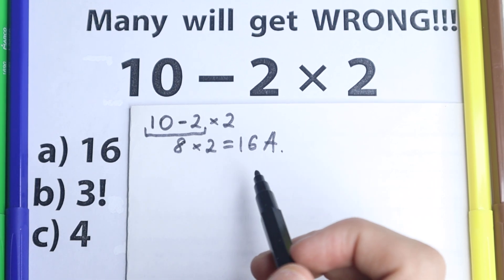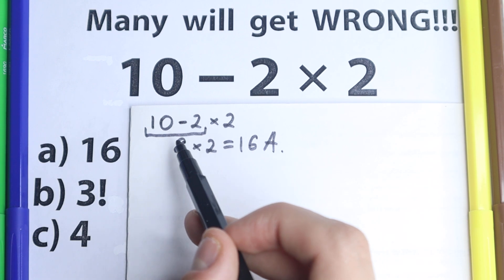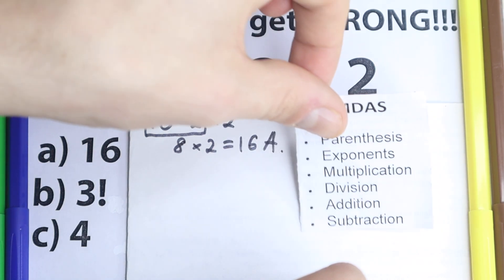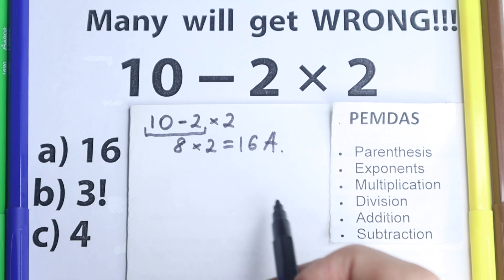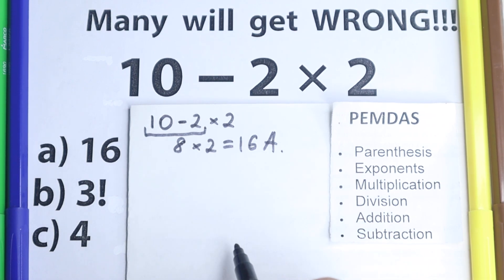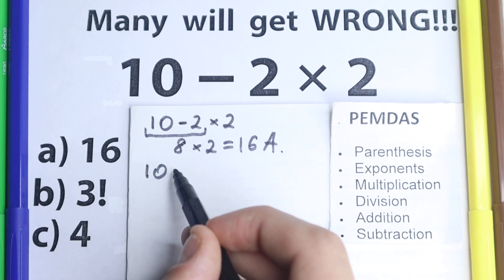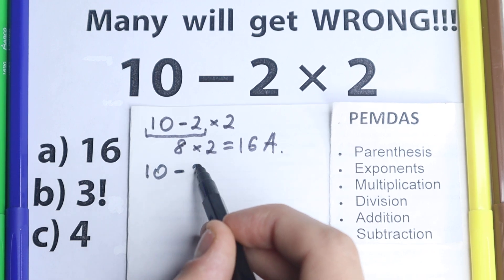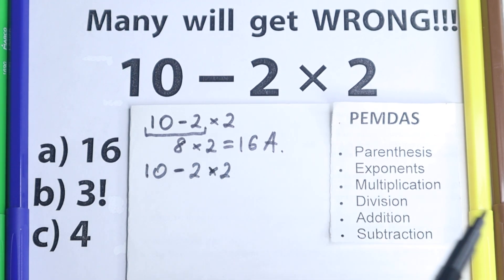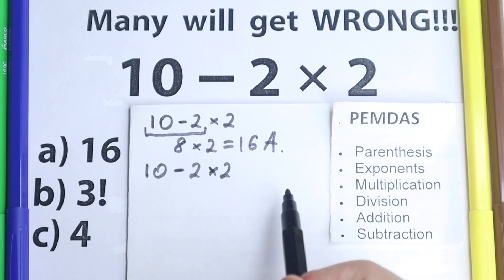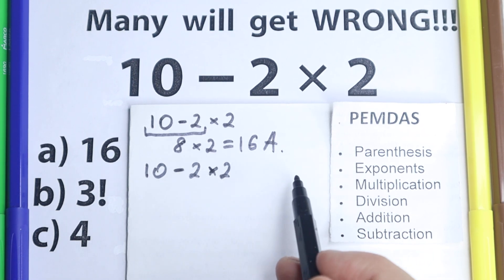We need to know about order of operations, because the left-to-right approach is not the correct order of operations. Let's solve it according to order of operations. Here we have PEMDAS — there are a lot of order of operation mnemonics, whether you call it PEMDAS or BODMAS, but I use PEMDAS. So let's solve it according to PEMDAS.